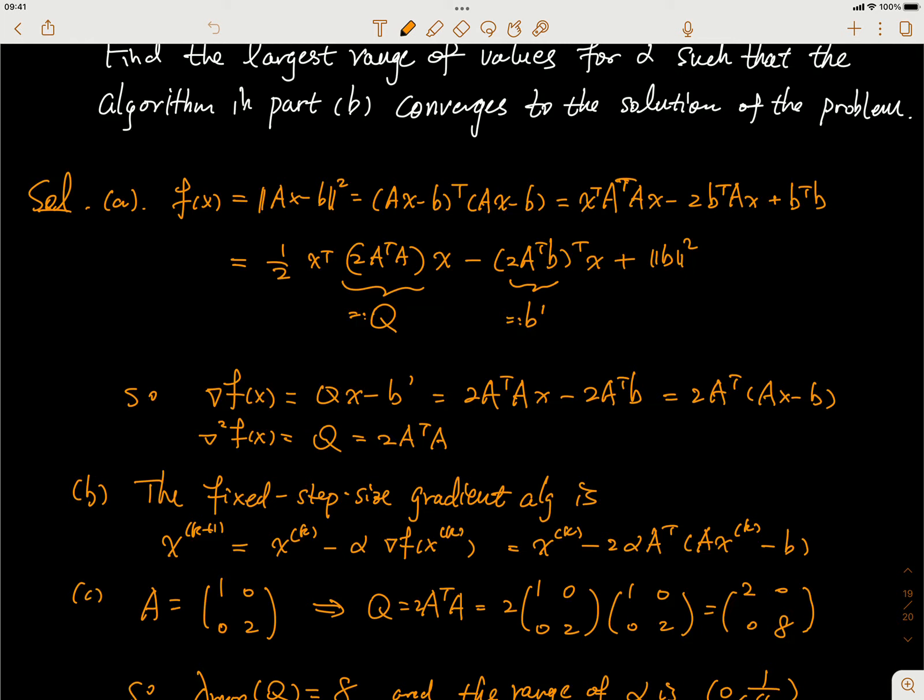By the way, another way to memorize this is, you just think that we have Ax minus b where both Ax and b are scalars. In this case, when we take the derivative, this should be 2 times (Ax - b) times A, or I can put A in the front, so it's 2A(x - b).